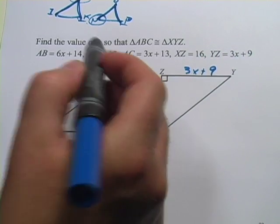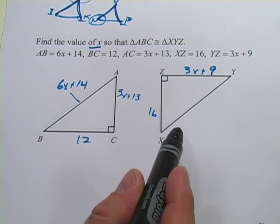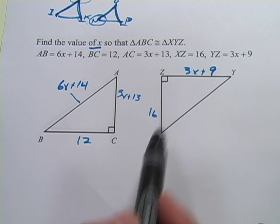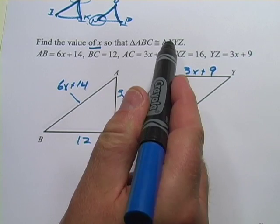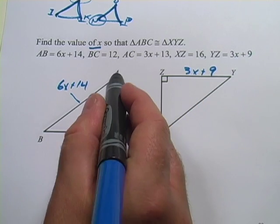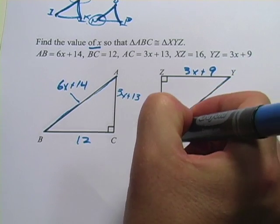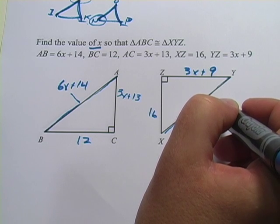Now what we want to do, we're trying to find the value of x. What we want to do is try to set up an equation between corresponding sides here. And we might not need to use all this information. If ABC is congruent to XYZ, the side AB is going to be corresponding to the side XY. That doesn't get us anywhere because we don't know anything about XY. So let's try another side.